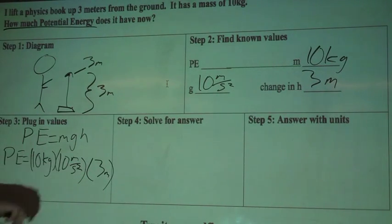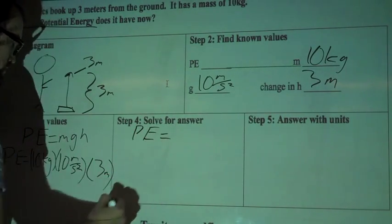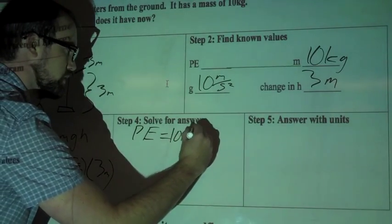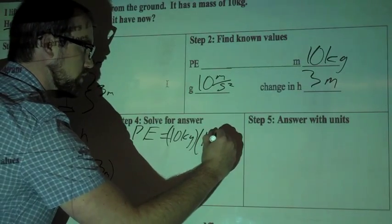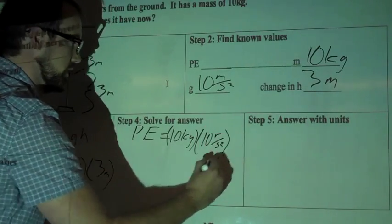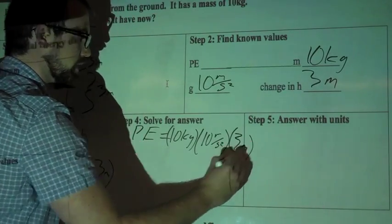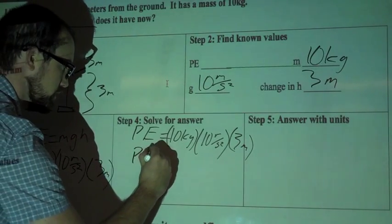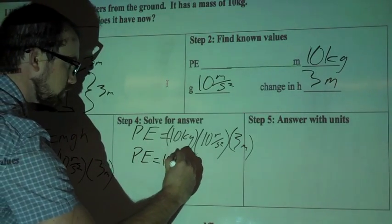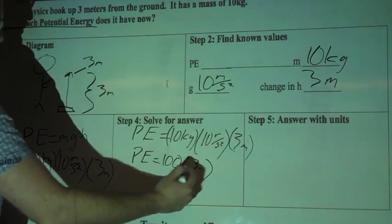Alright, so we've got it all plugged in, now we've just got to solve for the answer, so I'm going to rewrite this. PE equals 10 kilograms times 10 meters per second squared times 3 meters. I'll multiply that one by one, so 10 times 10, so I'll rewrite this. PE equals, so that's 100, and then I still need to multiply it by 3. So 100 times 3, my potential energy right now equals 300.